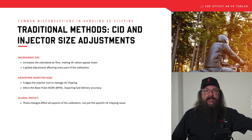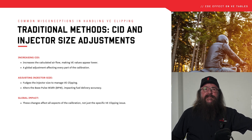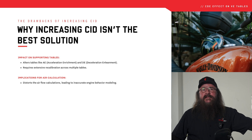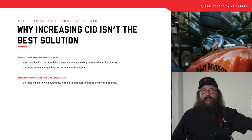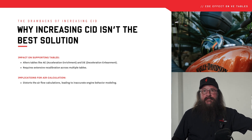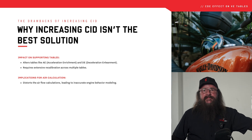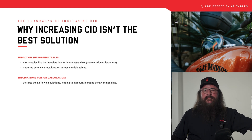CDE tables provide just that targeted solution. Adjusting the CID affects not just the VE table, but also numerous supporting tables — examples would be Acceleration Enrichment (AE) and Decel Enrichment (DE). These tables are critical for the engine's response to throttle inputs, and any misalignment here can cause erratic engine behavior.